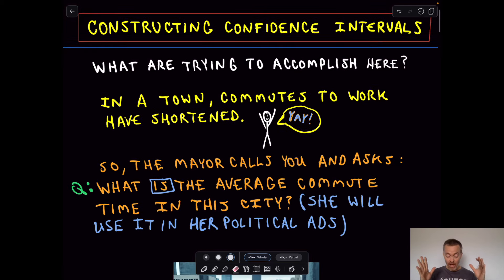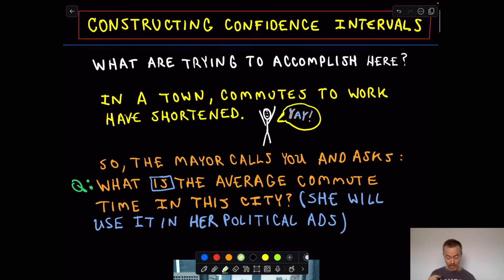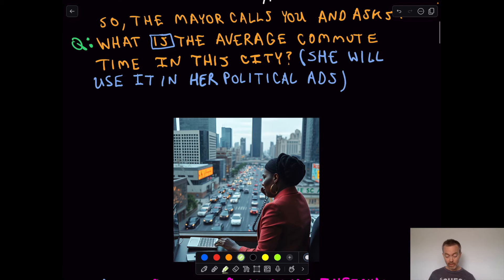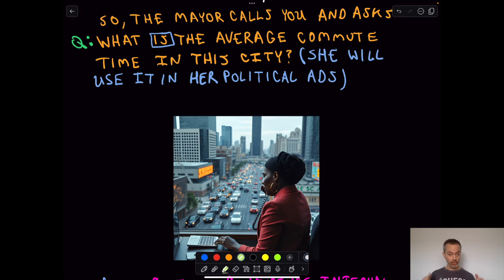So suppose you live in a town and you're lucky because the commutes have gotten shorter. Maybe there's better public transportation. Something's happened. Now, the political savvy mayor says, Aha, I'm going to use this in my upcoming advertisements because that should help me get re-elected. So the mayor calls you, her statistical friend, and says, What is the average commute in our city?